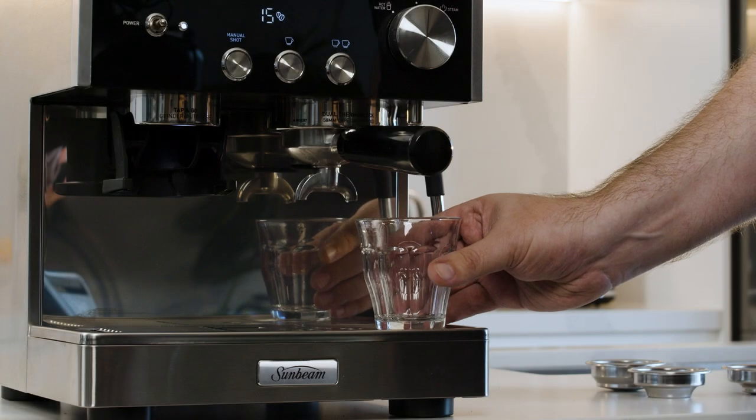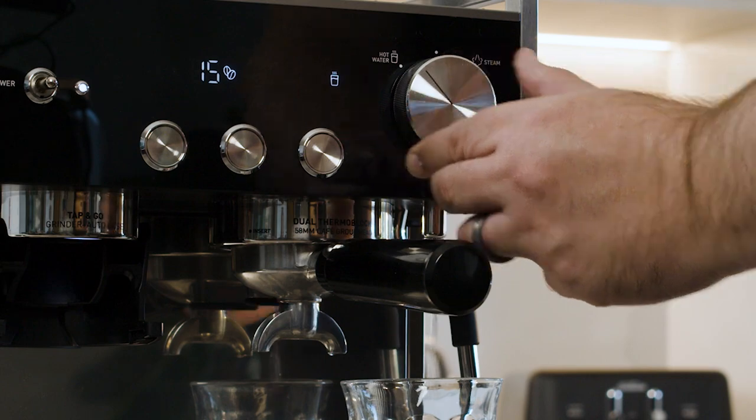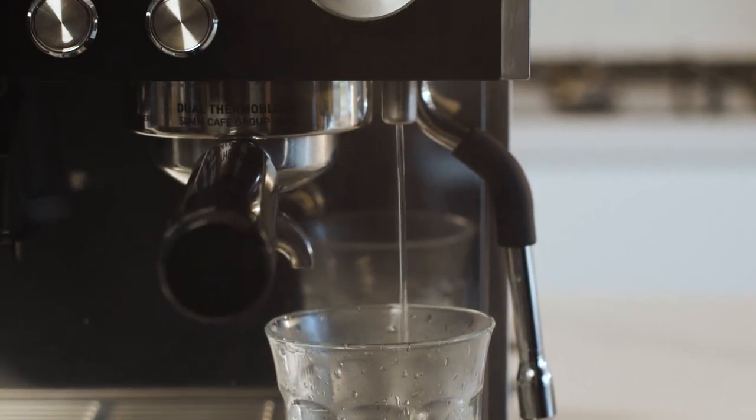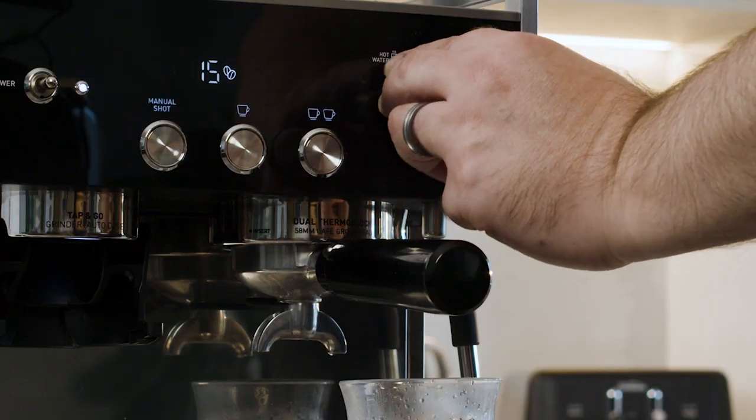To preheat your cup, simply place it on the drip tray under the hot water tap and turn the dial to the hot water position. Turn the hot water lever back to the center position and set the cup aside.